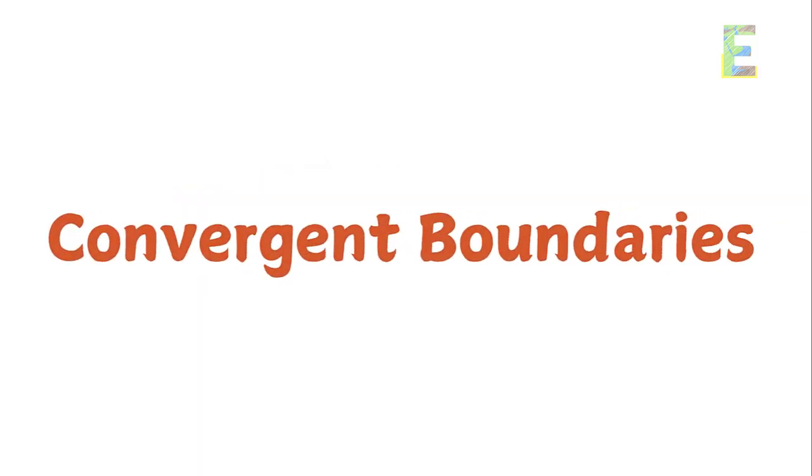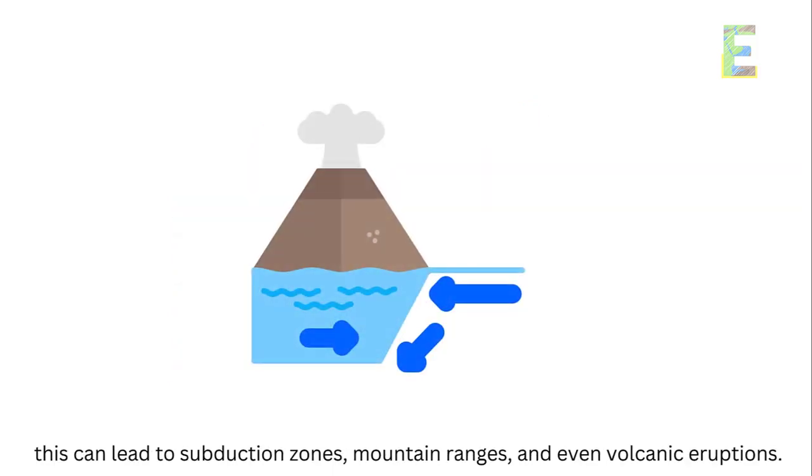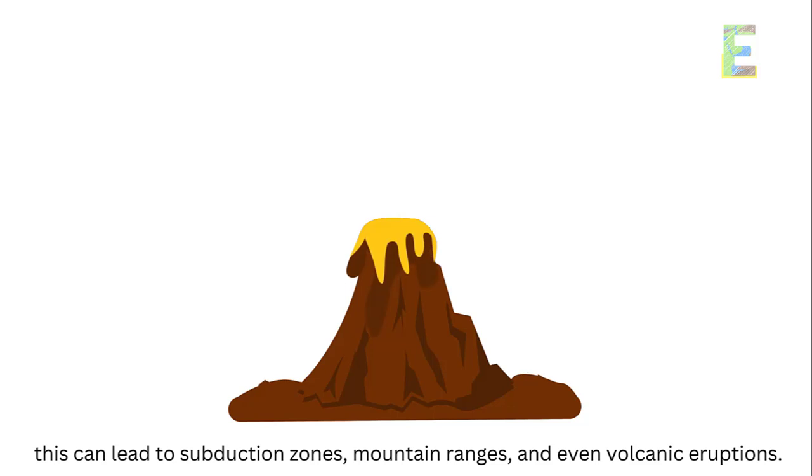Convergent boundaries. Convergent boundaries witness plates colliding. Depending on the type of plates involved, this can lead to subduction zones, mountain ranges, and even volcanic eruptions.